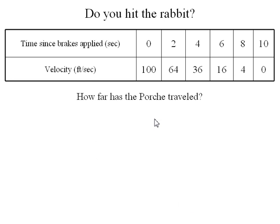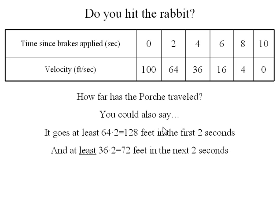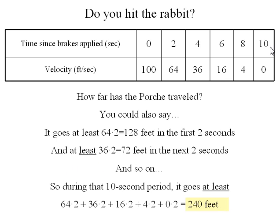We can do the same thing to get a lower bound, except on each two-second time interval we'll use the lower speed. So we went at least 128 feet in the first two seconds because we were going at least 64 feet per second for those two seconds. Remember, these are very conservative — we started at 100 feet per second and went down to 64, but we can only work with the numbers that we see. In the second two seconds, between two and four seconds, the slowest speed we were going was 36 feet per second. If we did that for two seconds, we would have traveled 72 feet. Doing that for all the lower bounds, our minimum distance traveled is 240 feet.